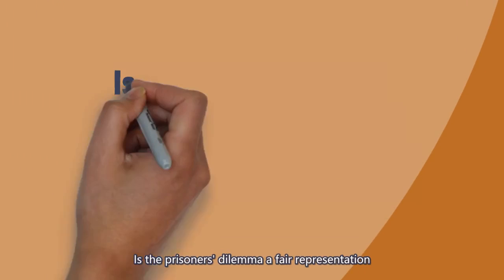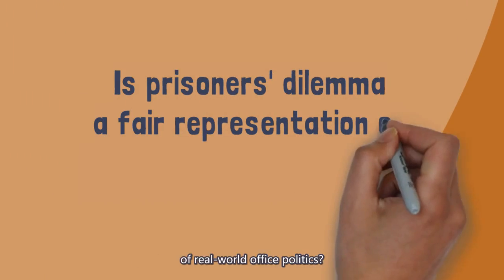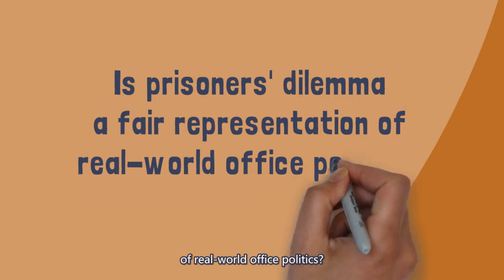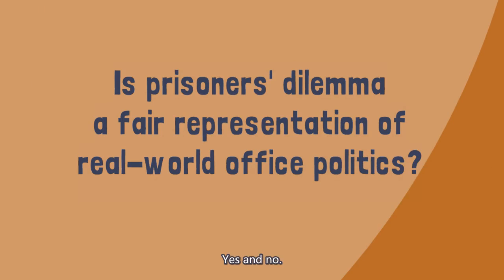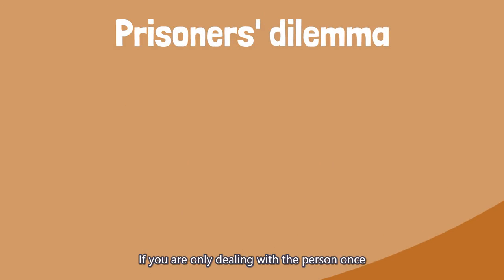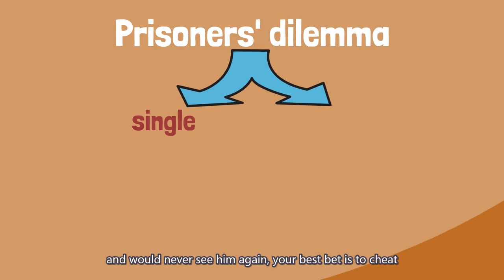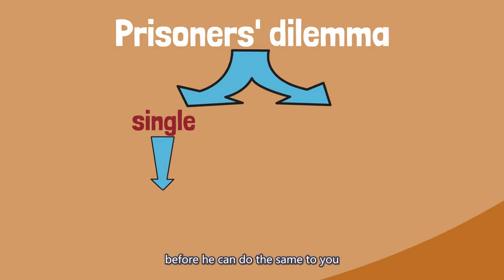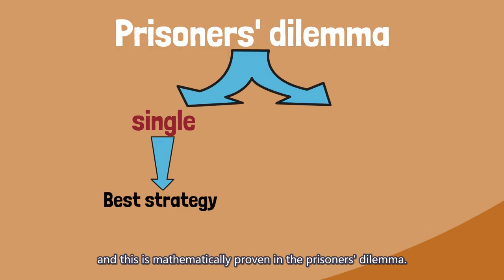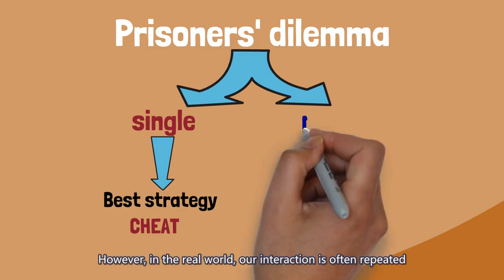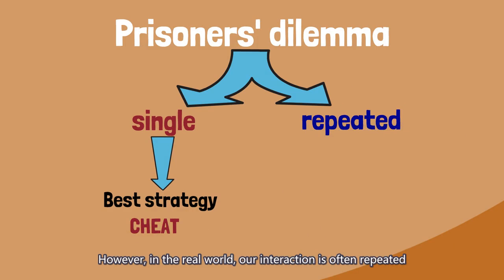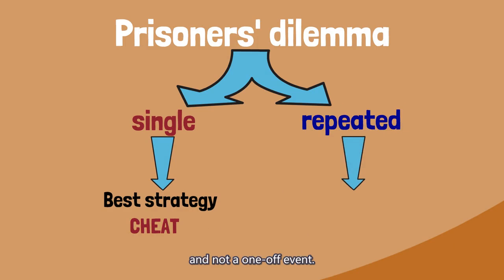Is the prisoner's dilemma a fair representation of real-world office politics? Yes and no. If you are only dealing with the person once and would never see him again, your best bet is to cheat before he can do the same to you, and this is mathematically proven in the prisoner's dilemma. However, in the real world, our interaction is often repeated and not a one-off event.